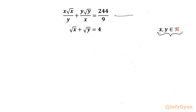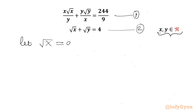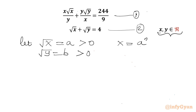Let us get started by considering equation number 1 and equation number 2. I will use substitution: let √x = a and √y = b. So a must be positive and b must be positive. From this, x = a² and y = b². Let us rewrite equation 1 using these substitutions.